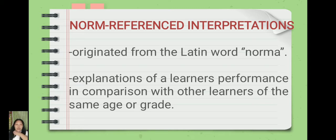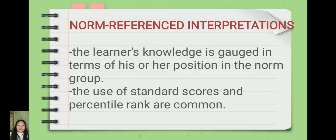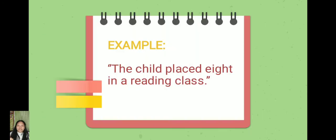Apart from school average norm, there are other types of norms that can be reported, like international, national, and local norm groups, and special norm groups. Norm referenced interpretations are explanations of a learner's performance in comparison with other learners of the same age or gender. The learner's knowledge is gauged in terms of his or her position in the norm group. One important aspect of norm referenced interpretation is the use of standard scores and percentile rank.